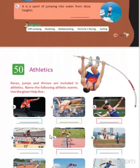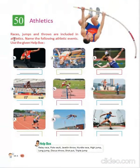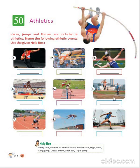Now move on to Chapter 50 — Races, Jumps, and Throws. These are included in athletics. Here we have to name the following athletic events. This is Shot Put. It is High Jump. It is Javelin Throw. It is Triple Jump. It is Hurdle Race. It is Long Jump. It is Relay Race. It is Pole Vault. And it is Discus Throw. So, these are some athletics events.